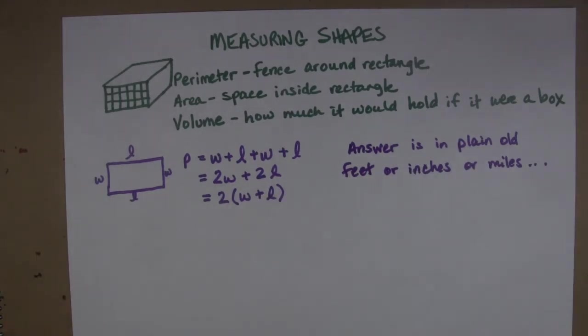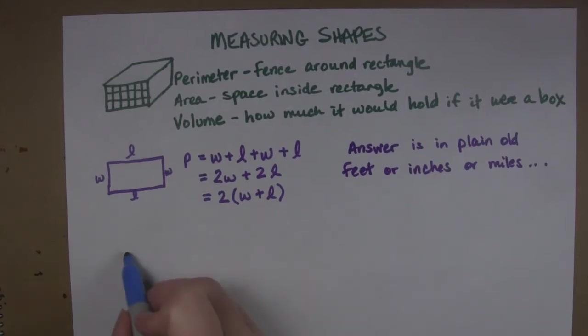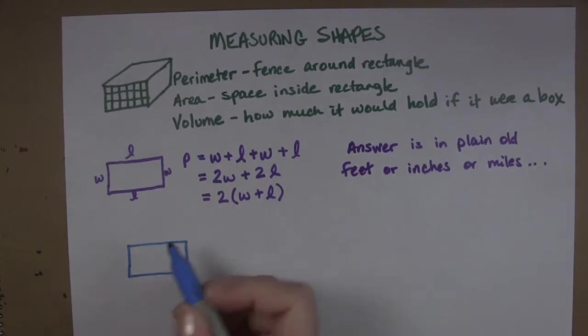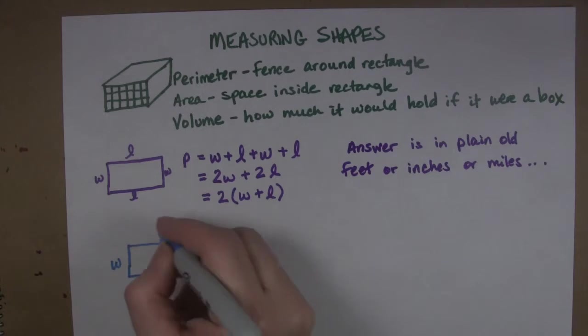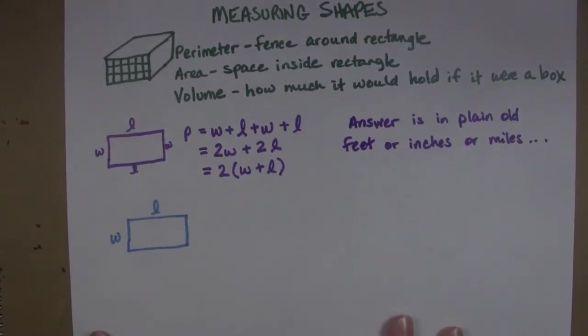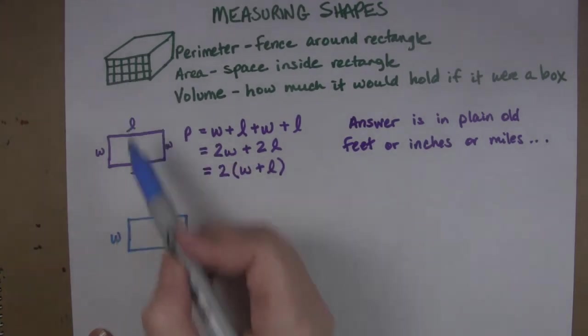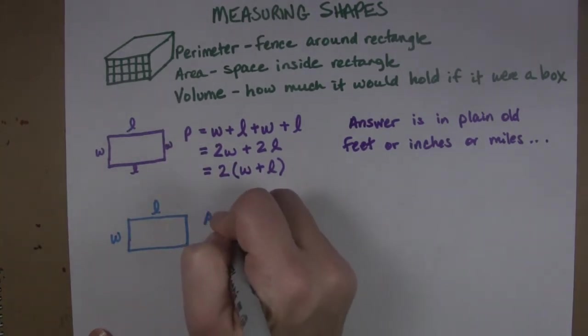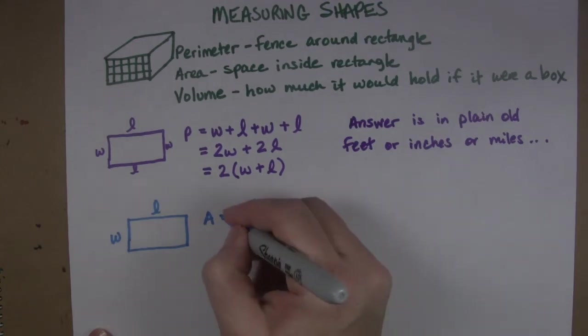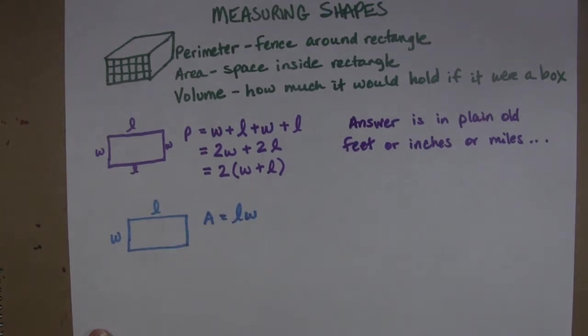It's a little bit different when we start working with area. So here's our same rectangle and we have our width and we have our length but the formula is a little different of course because now we're calculating all the space inside the rectangle. And the formula here is that we take length times width.